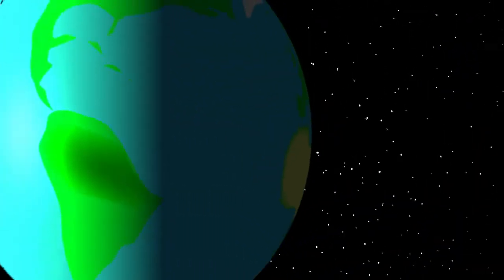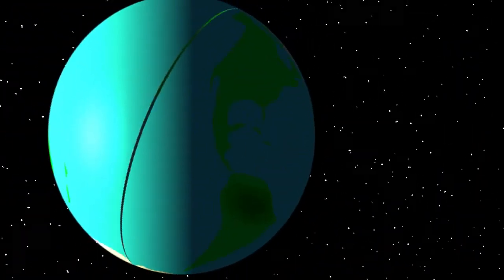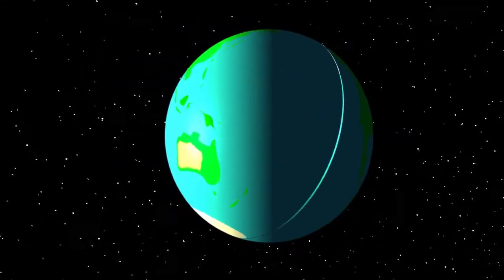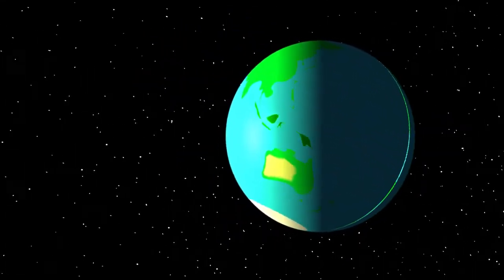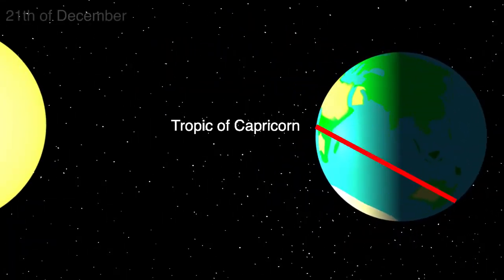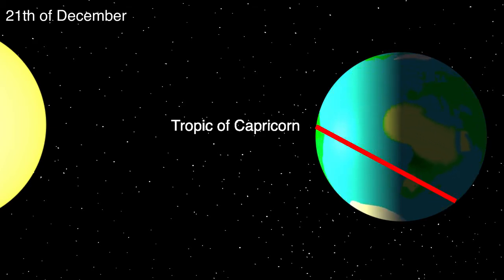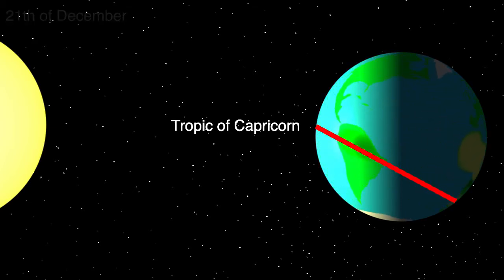Because the Earth's axis is tilted, the sun's energy isn't directed to the equator every month. At the 21st of December, the Tropic of Capricorn — a latitude circle 23.5 degrees south of the equator — receives the most energy.